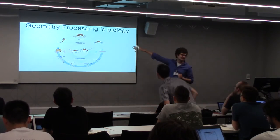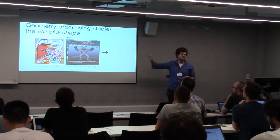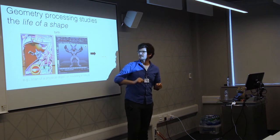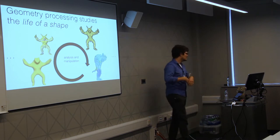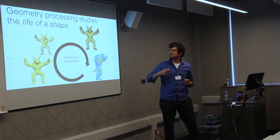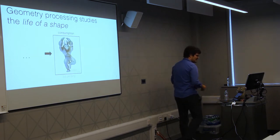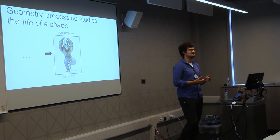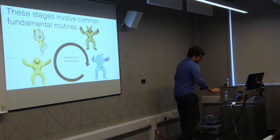Geometry processing is actually biology, because we are studying the lifetime of a shape. A shape either exists in the physical world and we scan it, or it's modeled on the computer using 3D modeling software. Then it goes through various stages in its life — analysis and manipulation, deformation, remeshing, and so on. Finally, it's consumed somehow: rendered on the screen or 3D printed, and the lifecycle begins anew.